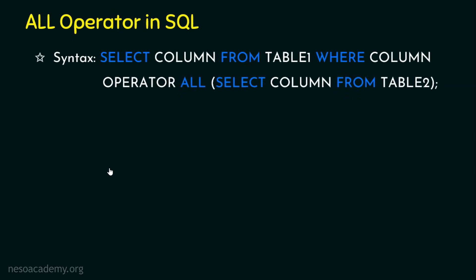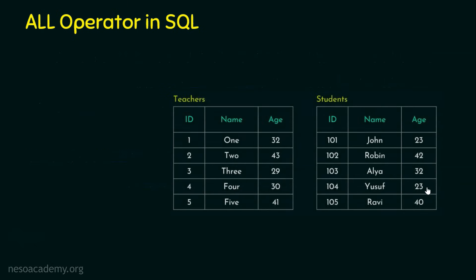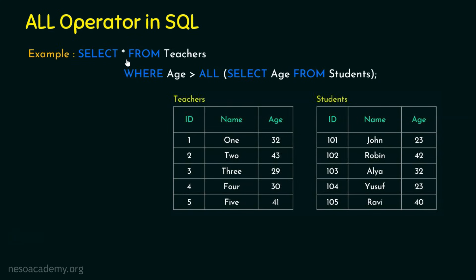Let's see an example. The query is: SELECT * FROM teachers WHERE age > ALL (SELECT age FROM students). We need the same teachers and students tables. The inner query returns the values: 23, 42, 32, 23, and 40.